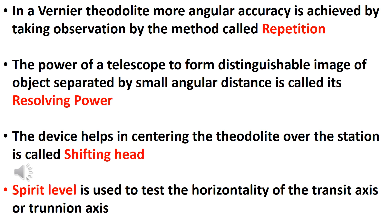The device that helps in centering the theodolite over the station is called the shifting head. Spirit level is used to test the horizontality of the transit axis or trunnion axis.